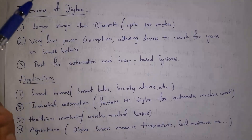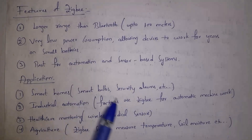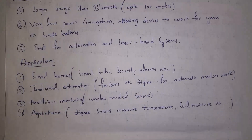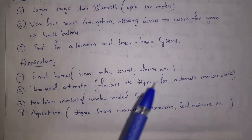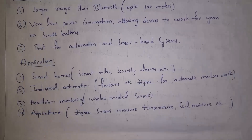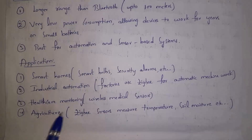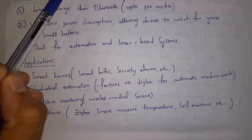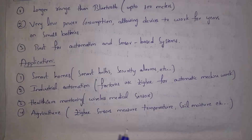Applications of Zigbee: smart homes — smart bulbs and security alarms contain sensors that work based on Zigbee technology. Industrial automation — to make machines work automatically. Healthcare monitoring — medical devices contain sensors that work based on Zigbee. Agriculture monitoring — to measure temperature, soil moisture, and more.